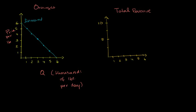What I want to start thinking about in this video is, given that we do have a monopoly on something — and in this example we're going to have a monopoly on oranges — given that we have a monopoly on oranges and a demand curve for oranges in the market, how do we maximize our profit? To answer that question, we're going to think about our total revenue for different quantities, and from that we'll get the marginal revenue for different quantities. Then we can compare that to our marginal cost curve, and that should give us a pretty good sense of what quantity we should produce to optimize things.